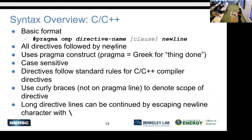For Fortran free-form code, the sentinel is `!$omp` instead of `#pragma omp`, and it can appear in any column. For continuation lines, use an ampersand at the end of the line and start the next line with the sentinel again. Unlike C/C++'s curly braces, Fortran uses explicit `!$omp parallel` ... `!$omp end parallel` sentinels to delimit the region.